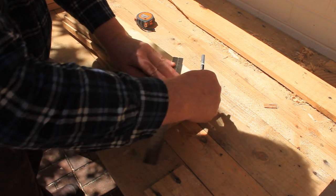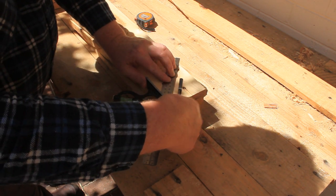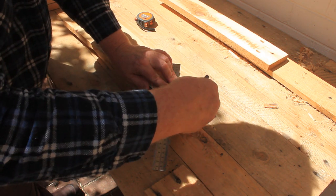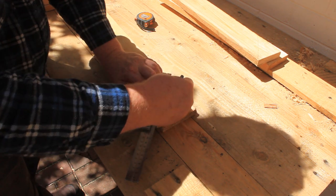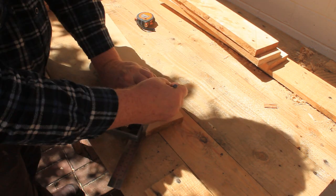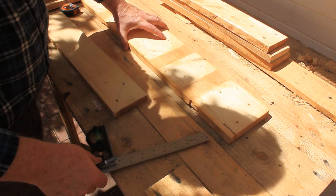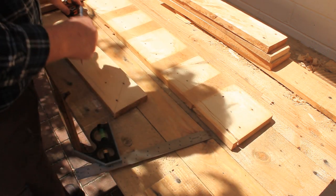Start by marking a 45 degree angle on one end of each of the shorter boards. Next measure and mark a 600 millimeter length on one of the wide boards.